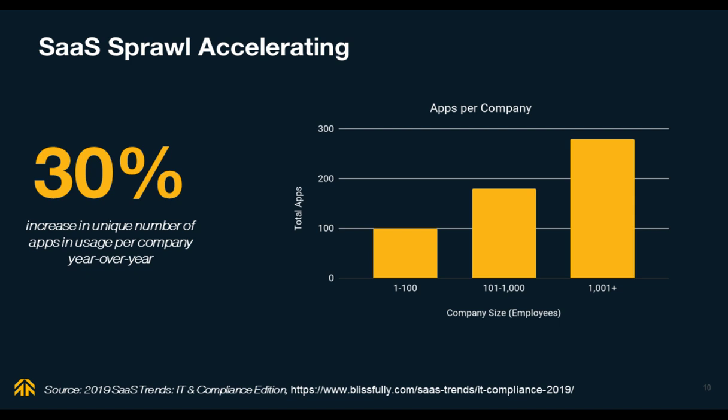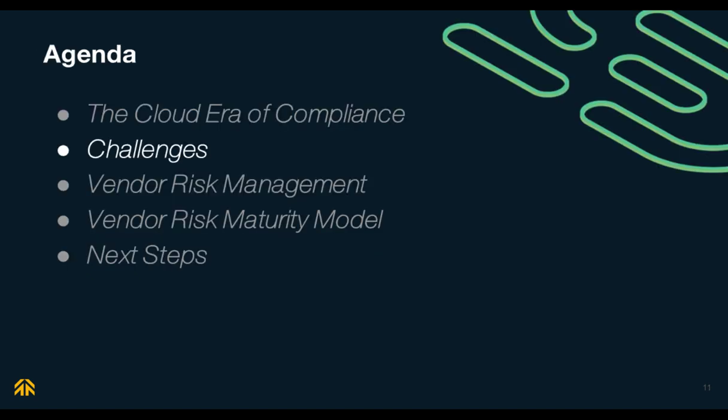In a survey of a thousand companies, 68% said they were mostly or completely driven by SaaS. 23% said they are entirely driven by SaaS, and only 9% said they had little to no SaaS adoption. This proliferation of SaaS services has led to a unique challenge in vendor risk management. We're only at the beginning stage of this SaaS sprawl — there's a 30% increase in the unique number of apps in usage per company year over year, compounded by company size.